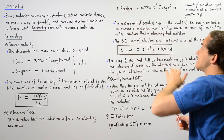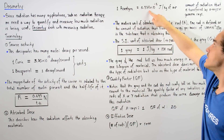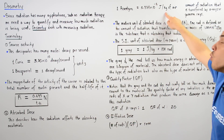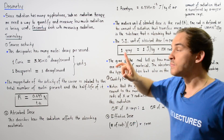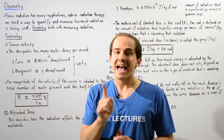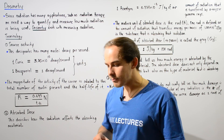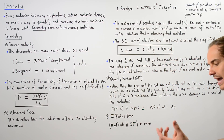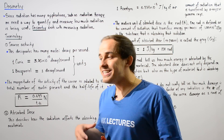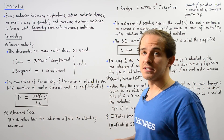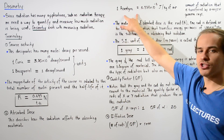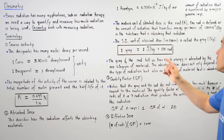One rentgen is defined as 0.878 times 10 to the negative 2 joules of energy transferred into 1 kilogram of surrounding air — specifically by X-rays or gamma rays. Because there are many different types of radiation beyond X-rays and gamma rays, and because materials other than air can also absorb radiation, we no longer use the rentgen. Instead, we use something called the RAD.